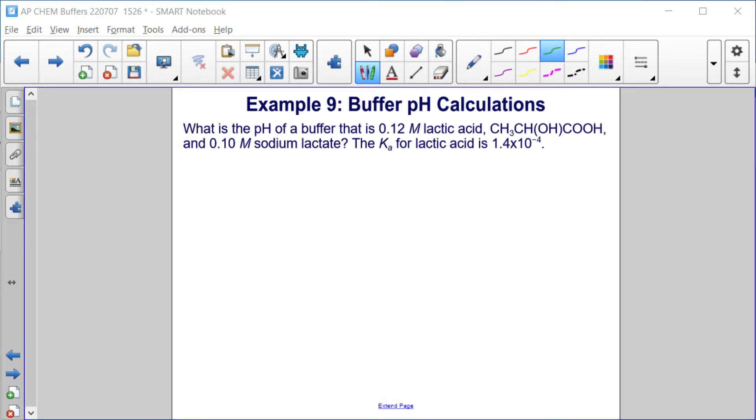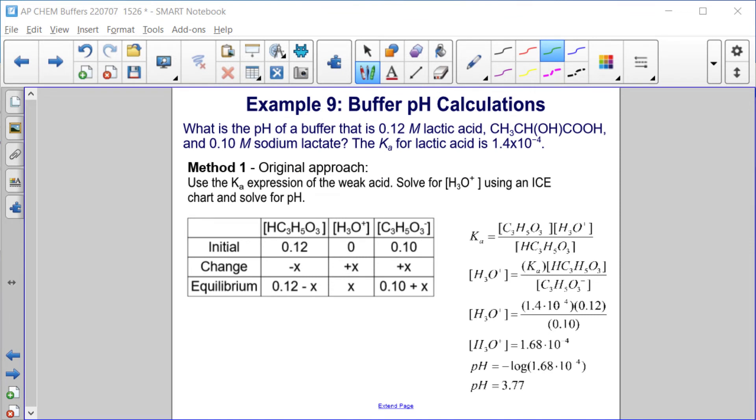Example 9, buffer pH calculations. What is the pH of a buffer that is 0.12 molar lactic acid, CH3CHOHCOOH, and 0.1 molar sodium lactate? The Ka for lactic acid is 1.4 times 10 to the minus 4. Method one for solving this is our original approach. Using the Ka expression for the weak acid, we have the lactate times the hydronium ion concentration over the lactic acid is equal to the Ka. And we need the hydronium ion concentration to solve for the pH.